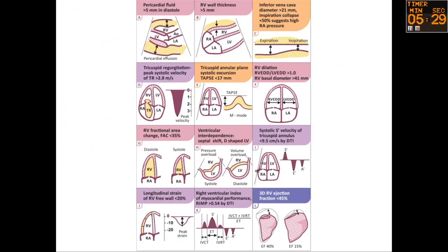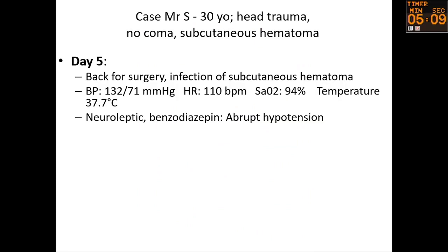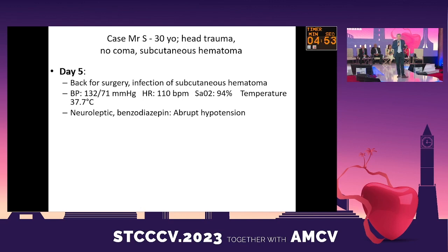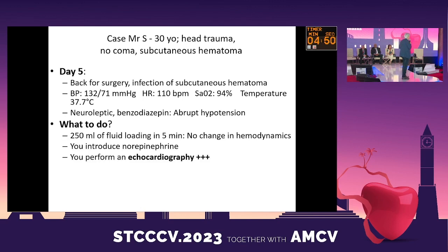Pour la gestion de ces malades, je vous conseille cet article avec 12 cas cliniques d'insuffisance cardiaque droite accompagnés d'échocardiographies et vidéos 3D. Voici un cas clinique : un sujet de 30 ans, victime d'un accident, qui au 5ème jour part au bloc opératoire. À peine l'anesthésie commencée, il fait une hypotension artérielle. Au soin intensif de cardiologie, face à une hypotension, on donne un peu de volume loading — 250 millilitres en 5 minutes — et c'est là qu'il ne faut pas tomber dans le piège.